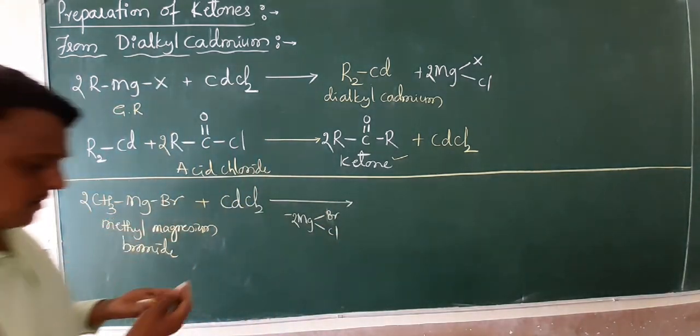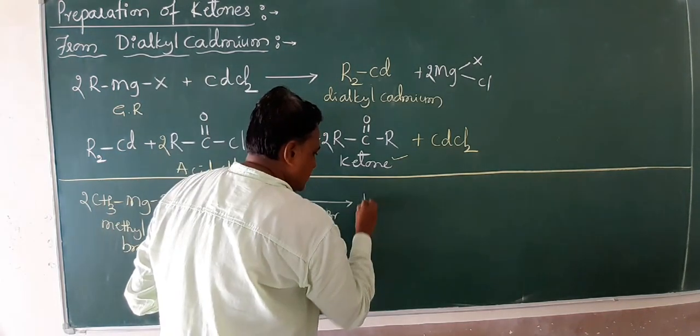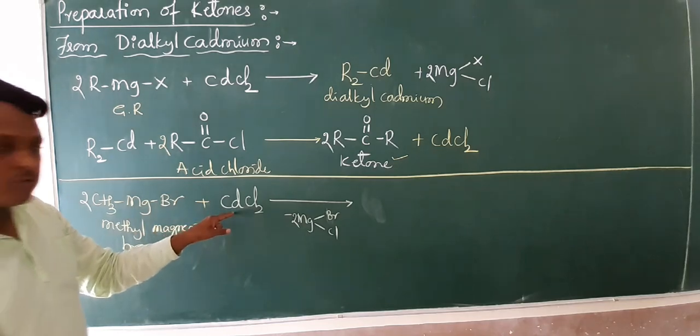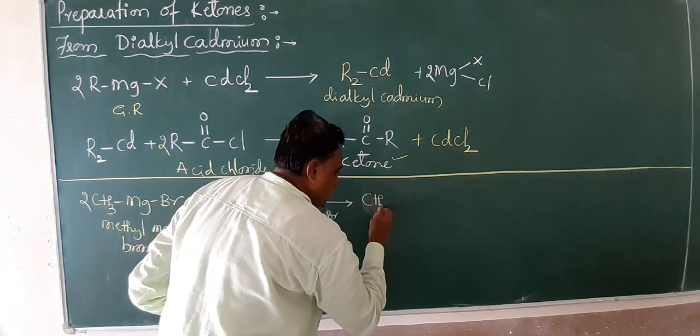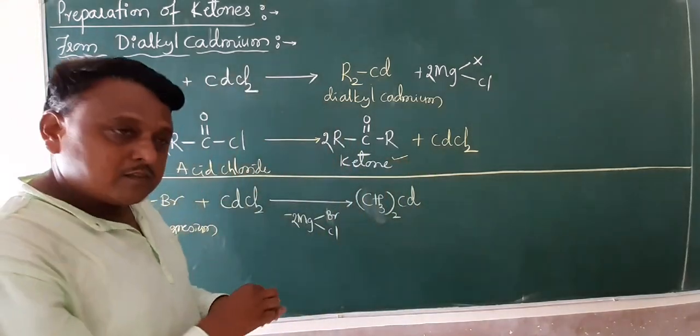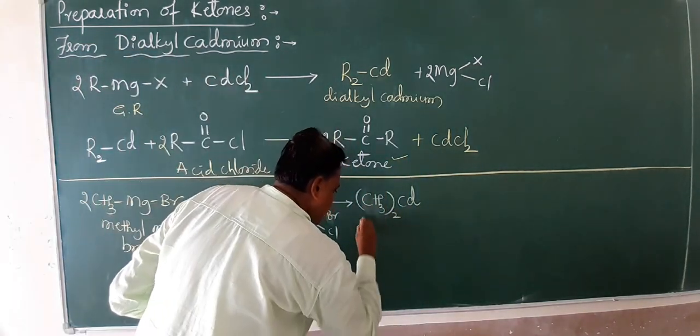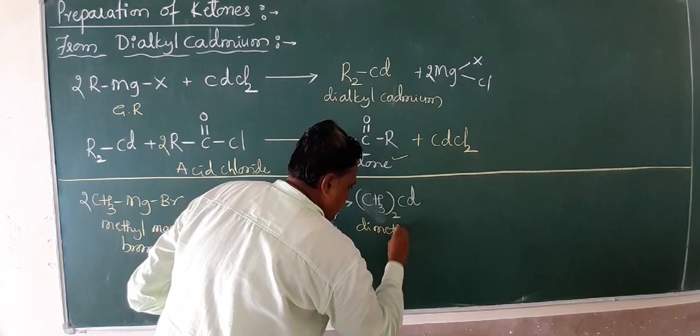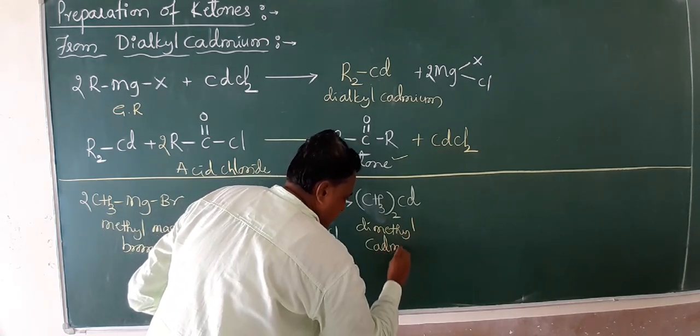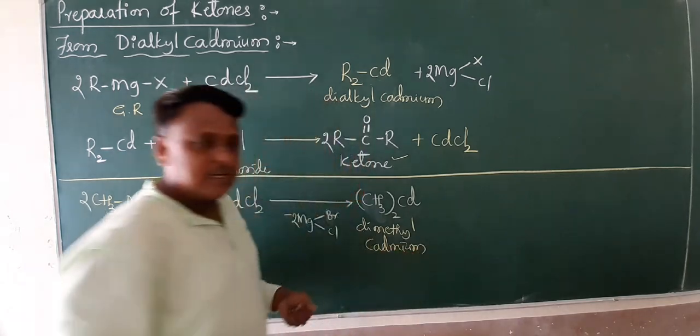What it forms? It is easy to form the R2Cd. That means CH3 is 2 moles. The compound is CH3-Cd-CH3. CH3 twice. This means dimethyl cadmium.